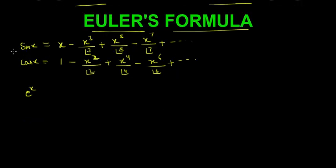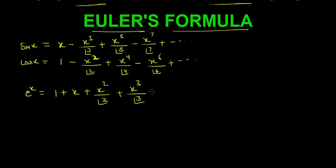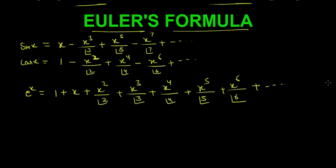These are basically the Taylor series expansion — also called Maclaurin series expansion — of sin x and cos x. E raised to power x is equal to 1 plus x plus x squared by 2 factorial plus x cubed by 3 factorial plus x to the power 4 by 4 factorial plus x to the power 5 by 5 factorial plus x to the power 6 by 6 factorial and so on. I am writing it a little long because we need these terms.